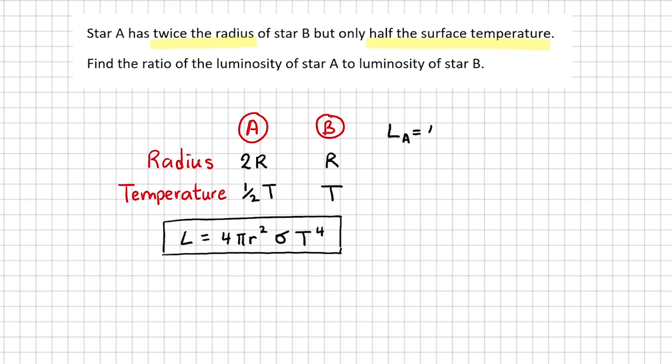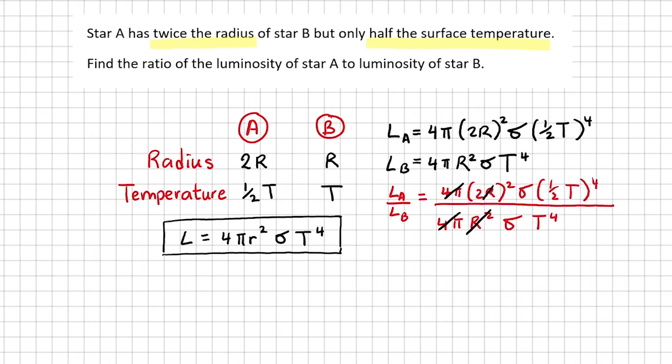Luminosity of star A is 4 pi times 2R to the power of 2 times Stefan-Boltzmann Constant times half of T to the power of 4. Luminosity of B is 4 pi times R squared times Stefan-Boltzmann Constant times T to the power of 4. Now to get the ratio, we need to divide one by the other. And then we cancel the constant, so we get a ratio of 1 to 4.